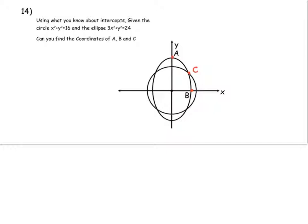I changed it to say, using what you know about intercepts, given the circle x squared plus y squared equals 16 and the ellipse 3x squared plus y squared equals 24, can you find the coordinates of A, B, and C?